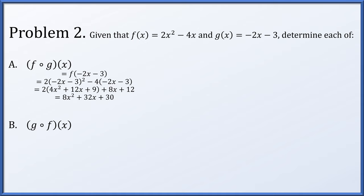Next, g(f(x)): we take f(x) = 2x² - 4x and plug it into g. We need to multiply by -2 and then subtract 3, so we distribute out -2 and subtract 3. It's worth pointing out that f(g(x)) = 8x² + 32x + 30, whereas g(f(x)) = -4x² + 8x - 3, and those are not the same thing. The order of composition in general will matter.